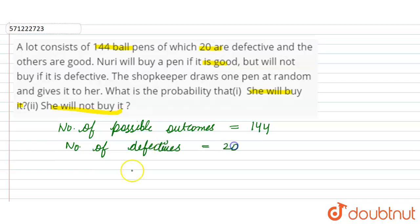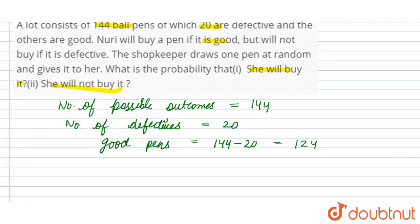Therefore, good pens will be equal to 144 minus 20, so 144 minus 20 is 124. 124 are good in the lot of ball pens.